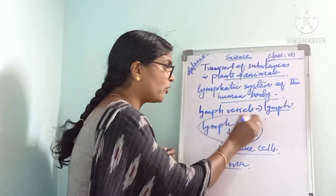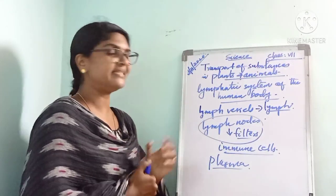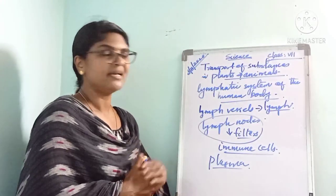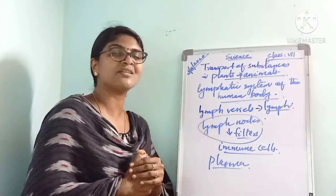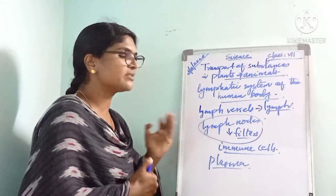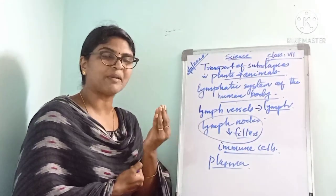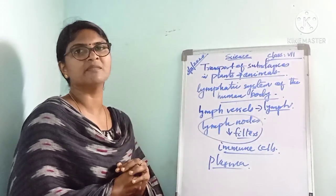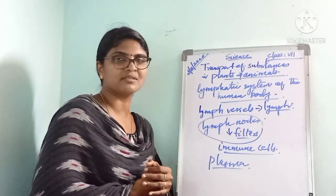The lymph nodes act as filters. They contain a special type of cells called immune cells. These cells protect our body from disease-causing organisms and harmful substances. That is how the lymphatic system works.